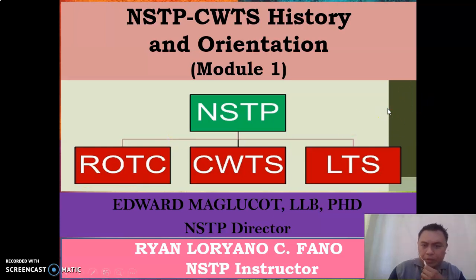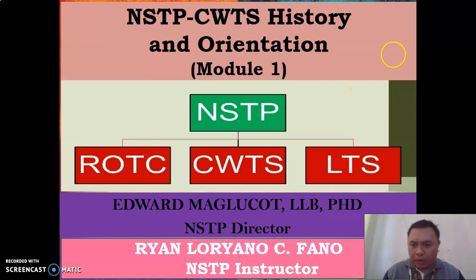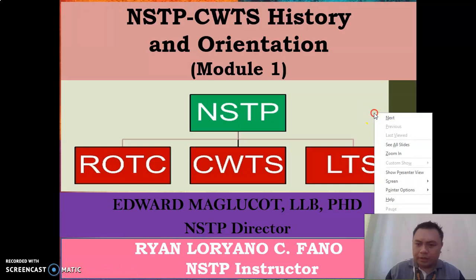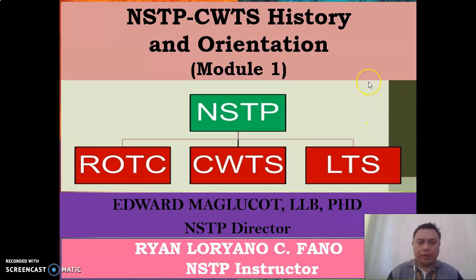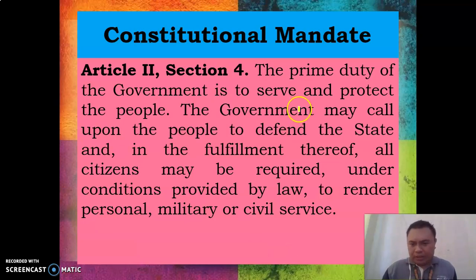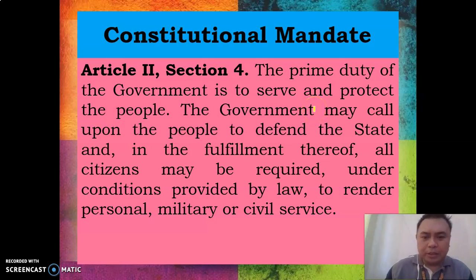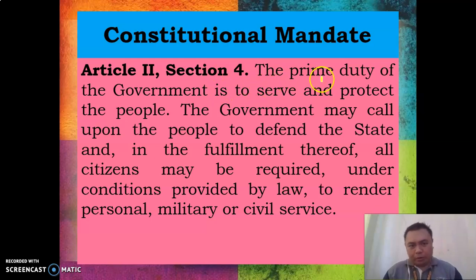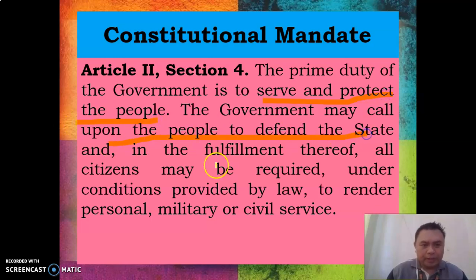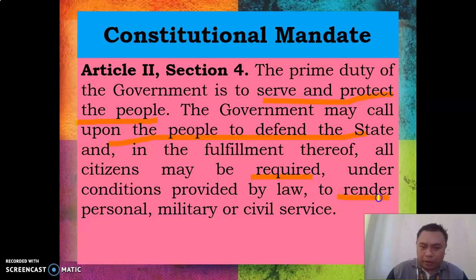For this video, I'll be discussing NSTP CWTS modules 1 to 3. Starting with Module 1, NSTP CWTS History and Orientation. The constitutional basis of NSTP is Article 2, Section 4 of the Constitution, which provides that the prime duty of the government is to serve and protect the people. The government may call upon the people to defend the state, and all citizens may be required to render personal military and civil service.